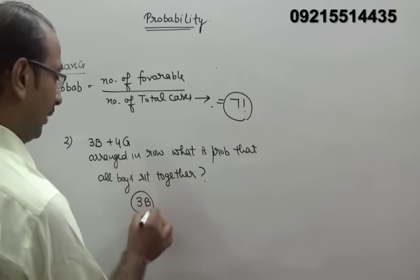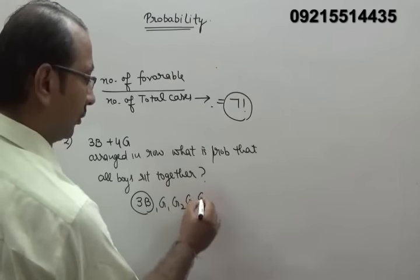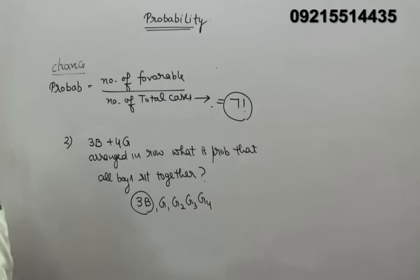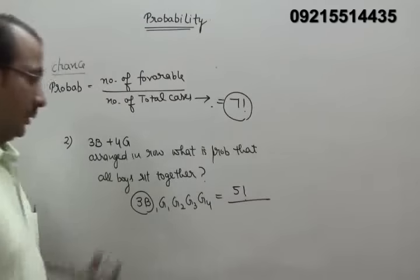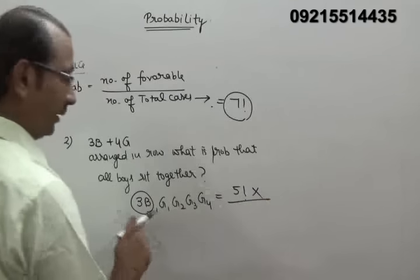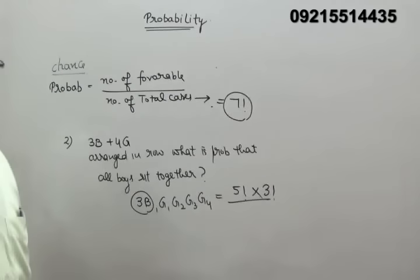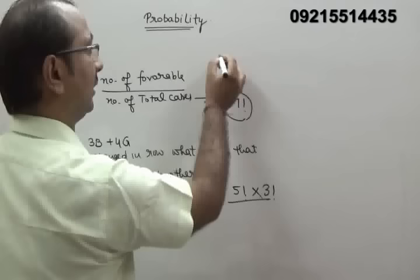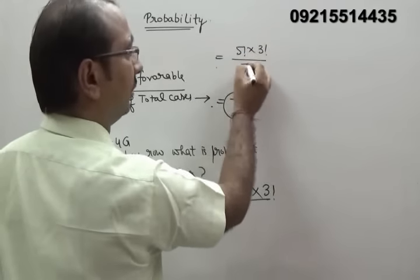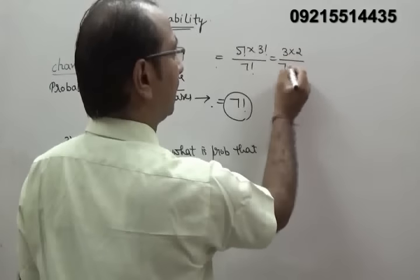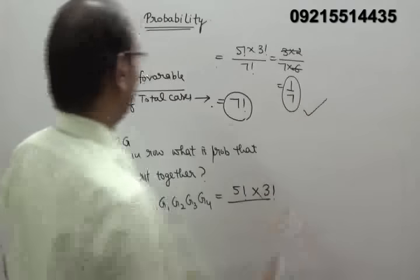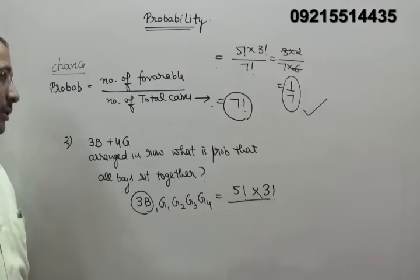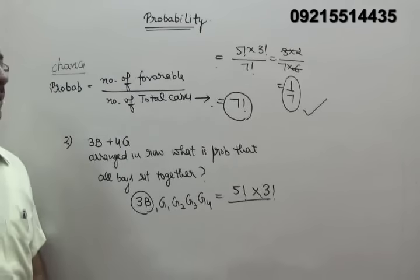The 5 units can be arranged in 5 factorial ways, and the 3 boys within their group can be arranged in 3 factorial ways. So favorable cases = 5 factorial × 3 factorial. Probability = (5 factorial × 3 factorial) / 7 factorial = (3 × 2) / (7 × 6) = 6/42 = 1/7. So the probability of all boys sitting together is 1 upon 7.